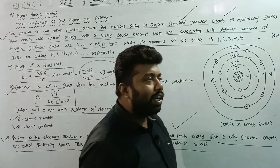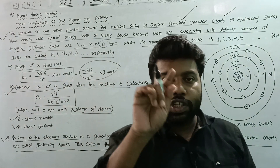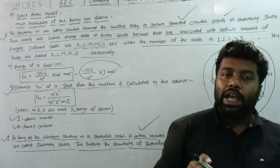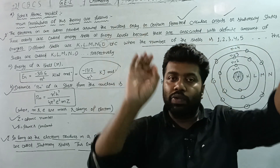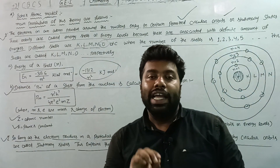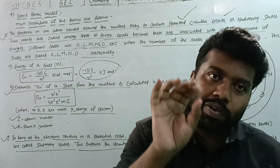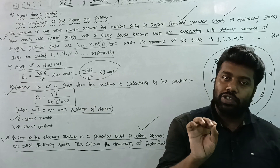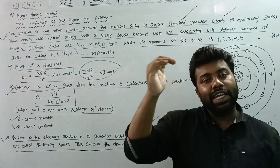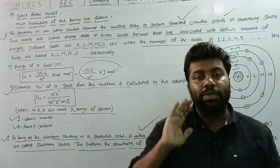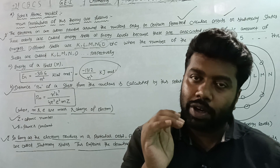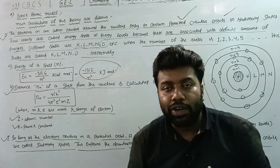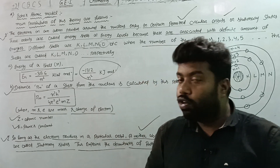If the electron is in a fixed orbit, it will not be able to radiate energy. This explains the drawback of the Rutherford atomic model. Unlike the Rutherford model, if the electron stays in a fixed particular orbit, it will not radiate energy — it will neither absorb nor emit. I will see you in the next video.